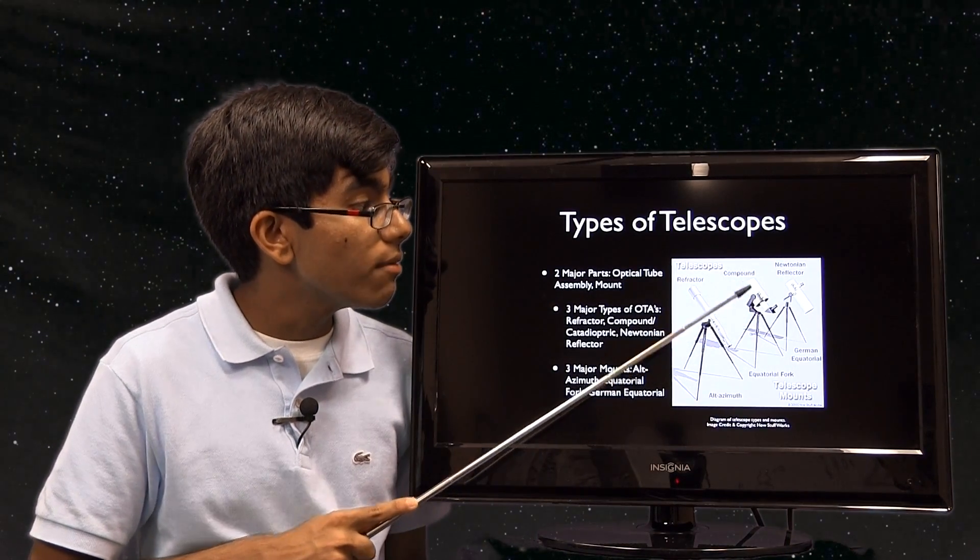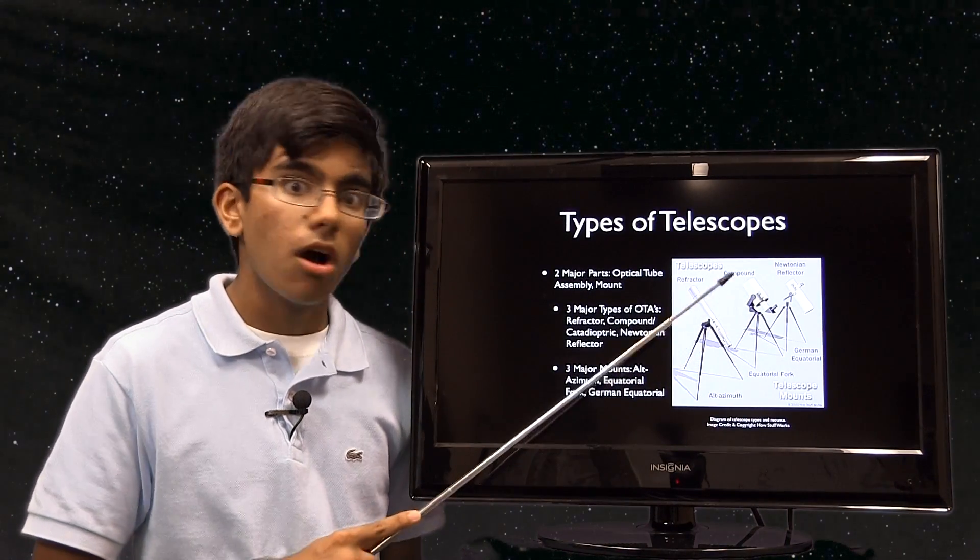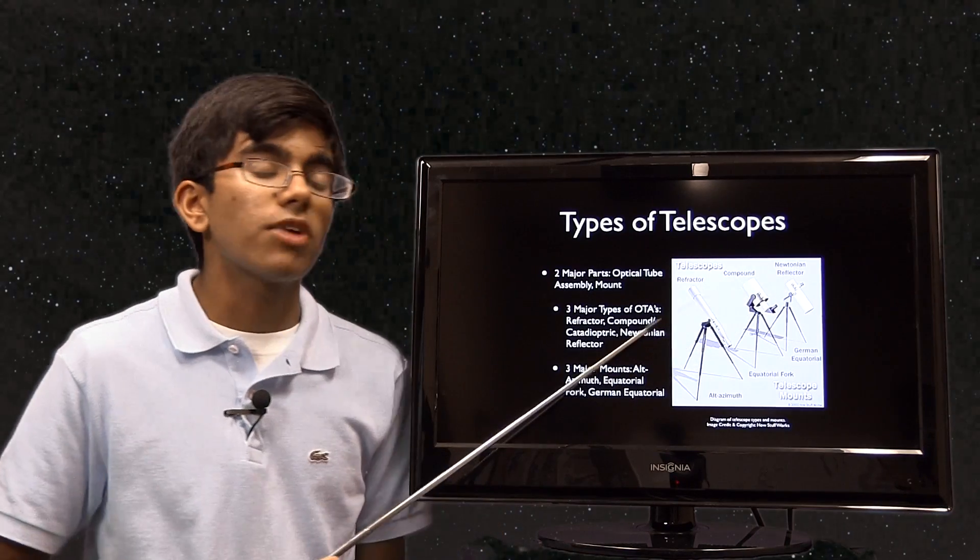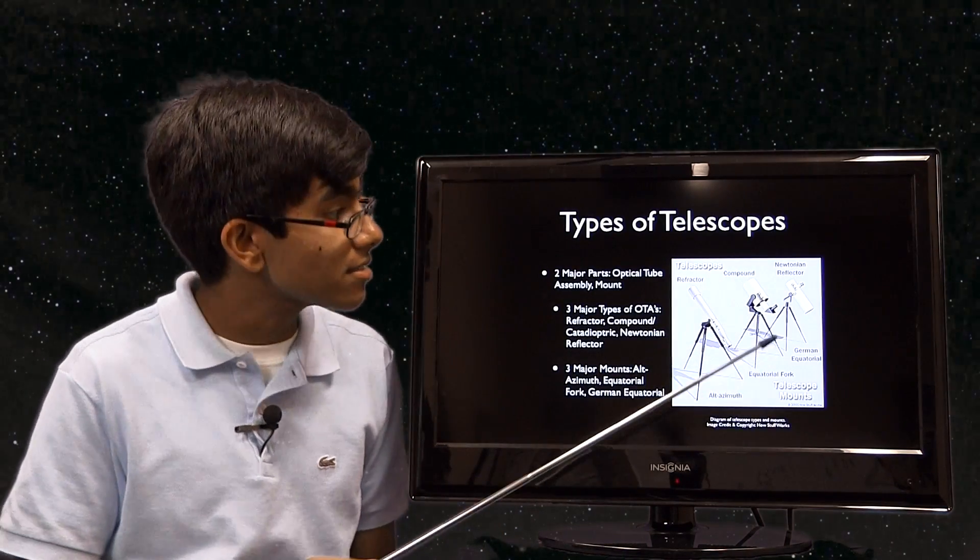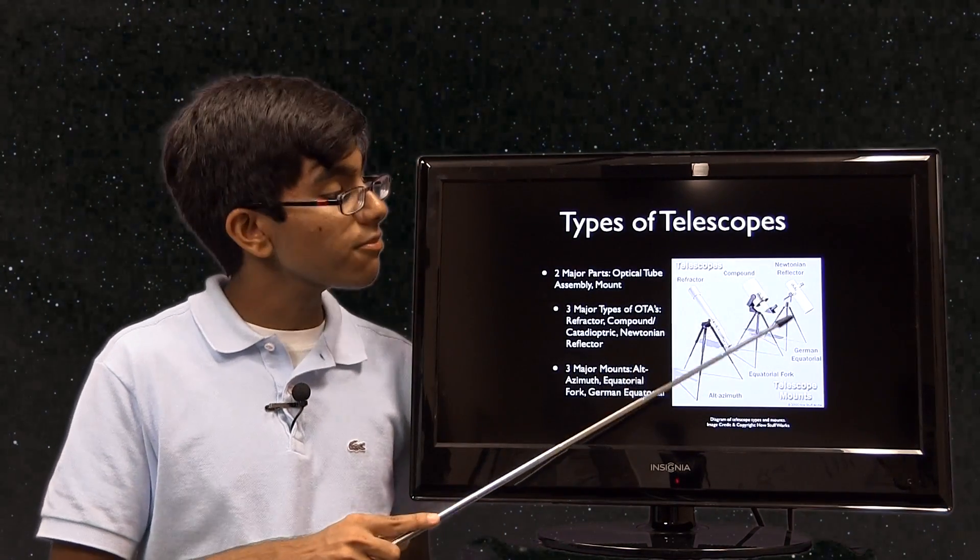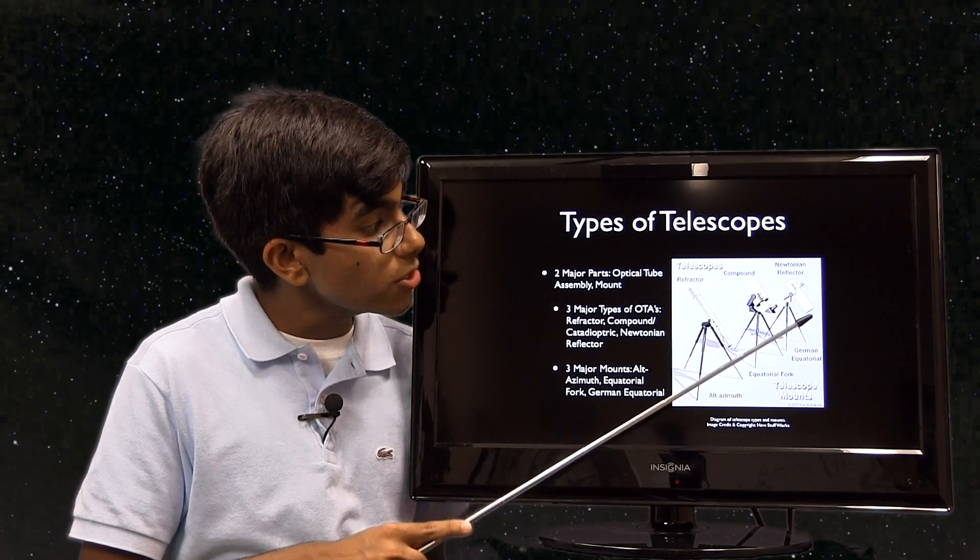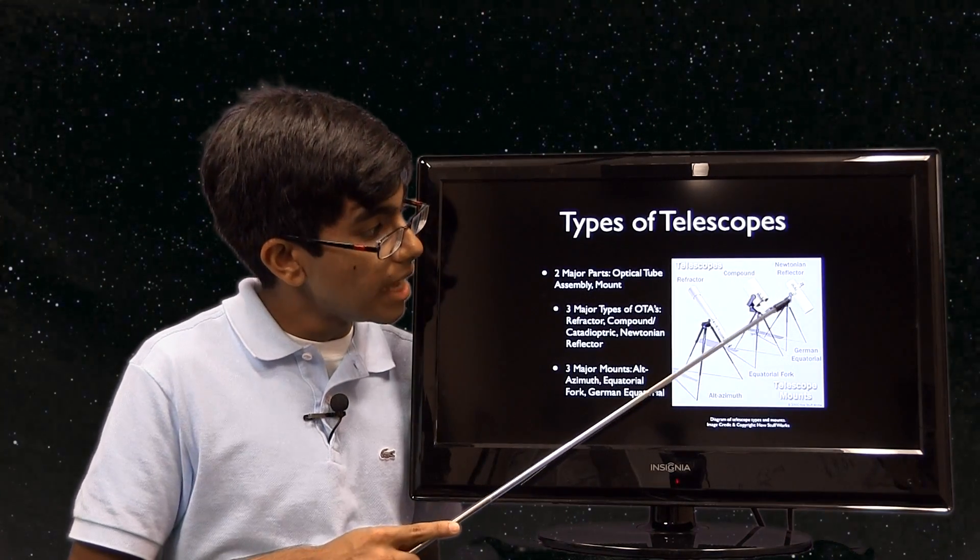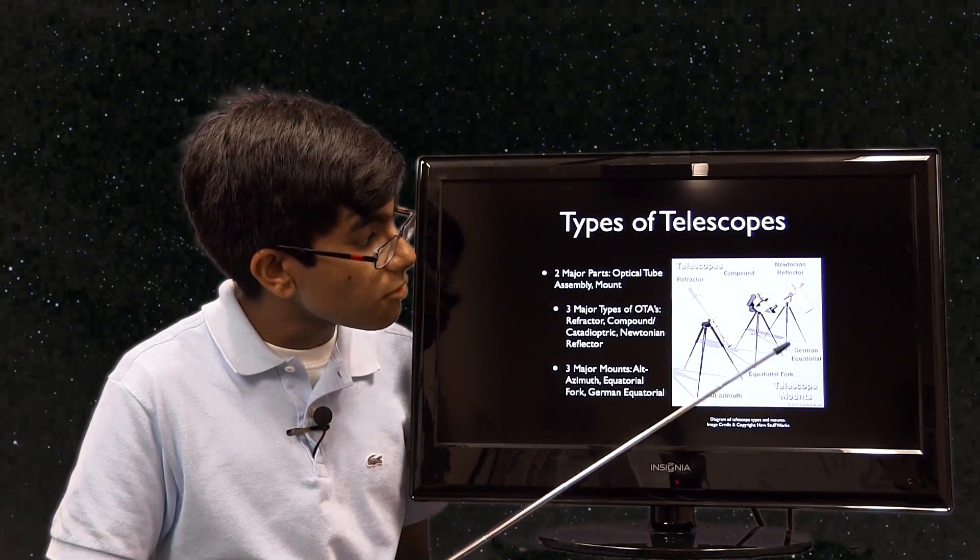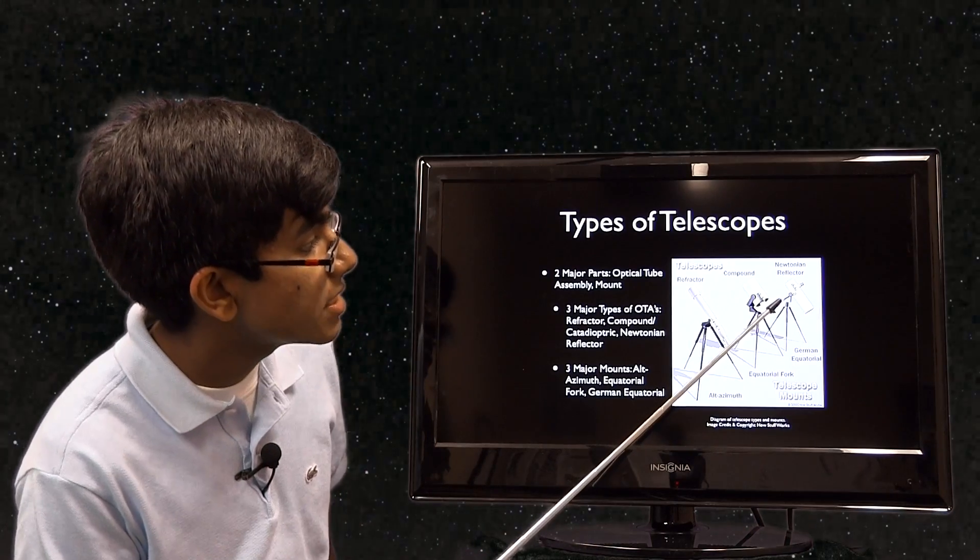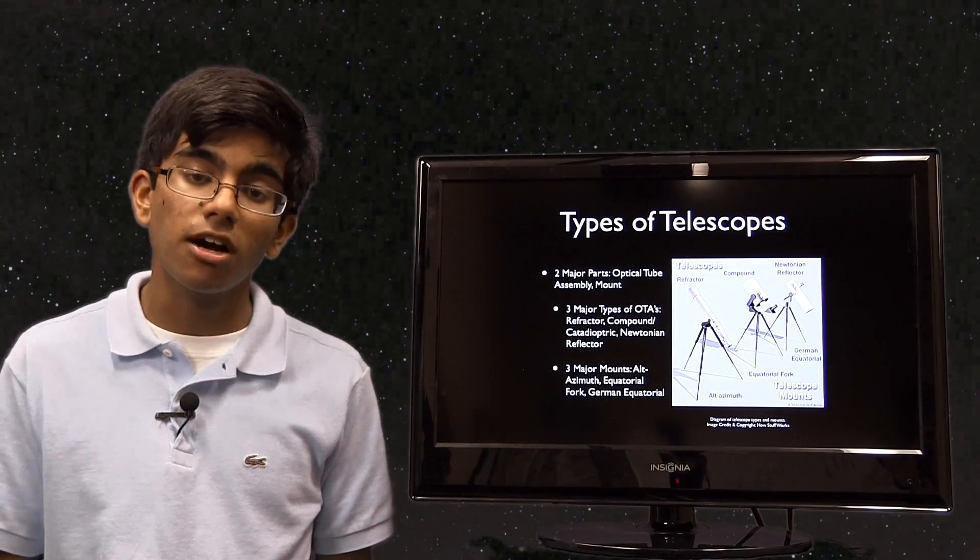When we mean stepping up the cost, the mount is stepping up the cost. All these optical tubes range in price, and we'll get to that in a few minutes. Lastly, we have the Newtonian reflector. The Newtonian reflector reflects light using a mirror. As you can see, this is on the German equatorial mount, which would have counterweights down on this shaft.